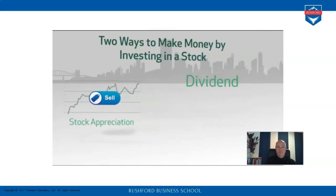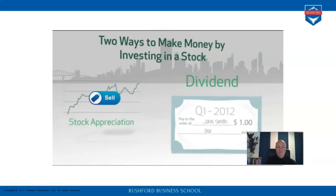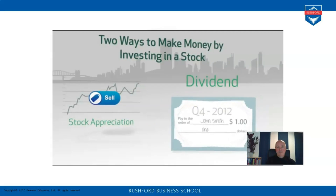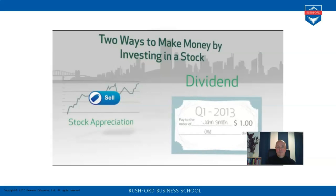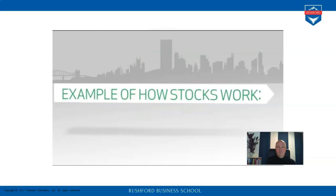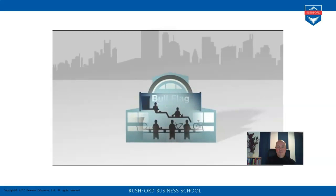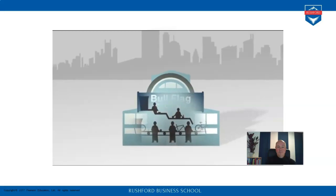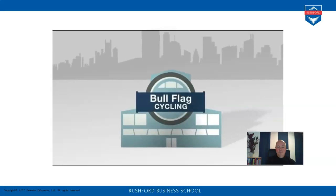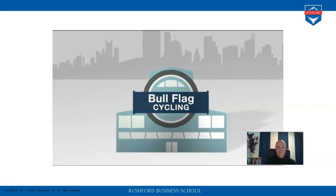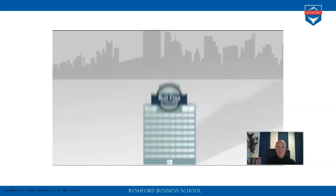A dividend is a periodic payment issued by some stocks — it is a way for a company to give a portion of its earnings to shareholders. Here's an example of how stocks work. Suppose there's a company called Bull Flag Cycling. This company makes bikes — really good bikes — and the company wants to expand so it can sell more bikes to people all around the world.